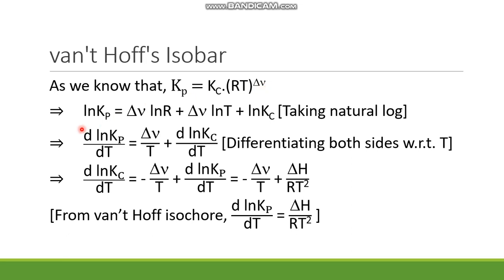If natural log is taken on both sides, then it will become ln Kp equals delta nu ln R plus delta nu ln T plus ln Kc.